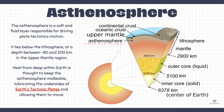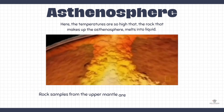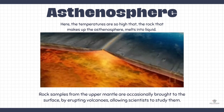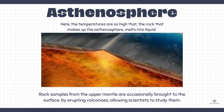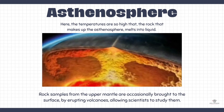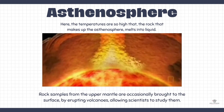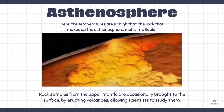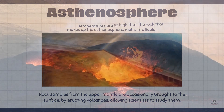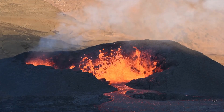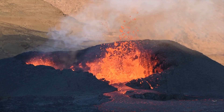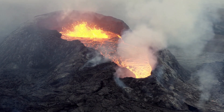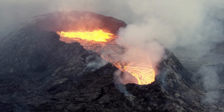Here, the temperatures are so high that, in places, the rock that makes up the asthenosphere melts into liquid. Only tiny parts of the asthenosphere are liquid, but it is soft enough to move, pushing around the tectonic plates above. Rock samples from the upper mantle are occasionally brought to the surface by erupting volcanoes, allowing scientists to study them.